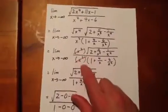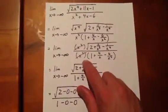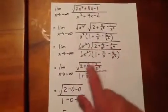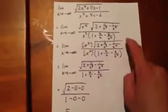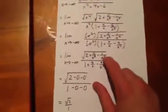Since we have the same factor in the numerator and the denominator, we can cross those out. And so what we're left with is the limit as x goes to negative infinity of this second factor over this second factor.